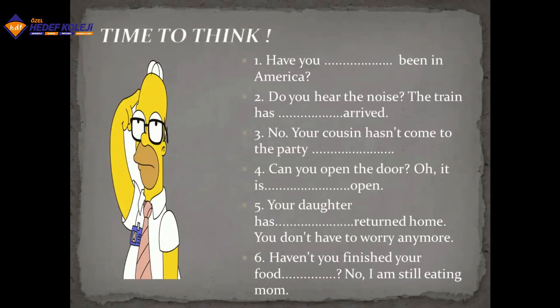'Ever' means 'hiç' and we use it generally in questions. 'Never' means 'hiç' but we use it in positive sentences and it gives negativity to the sentence. 'Already' is used between 'has/have' and the verb. 'Yet' means 'henüz' but not started — it's used at the end of the sentence. 'Just' is like 'already', used between 'has/have' and the verb, and also means 'henüz'.